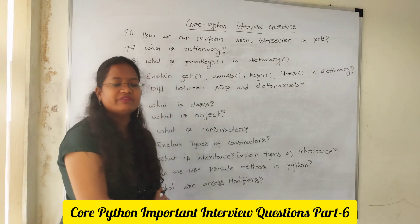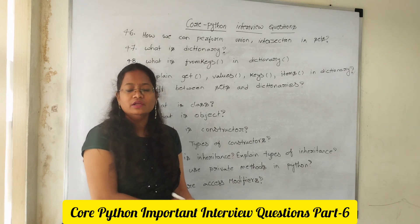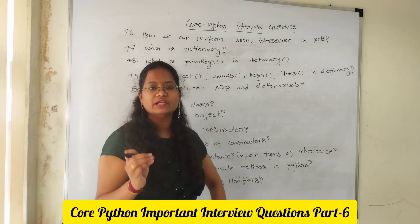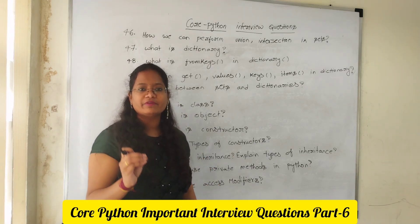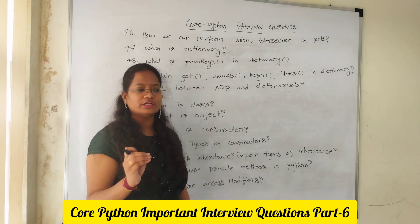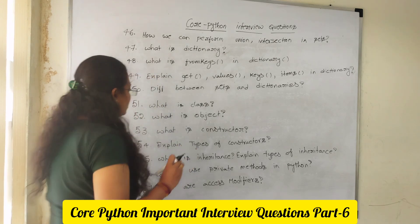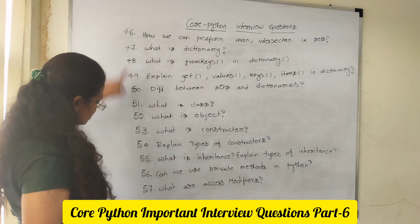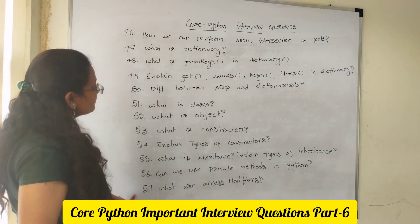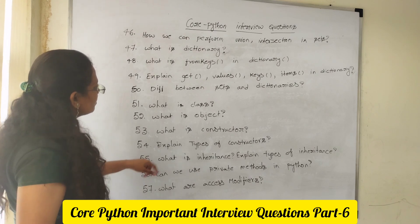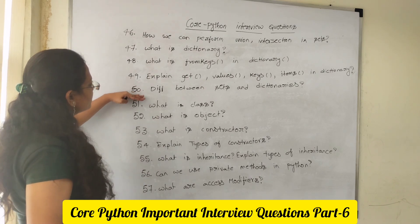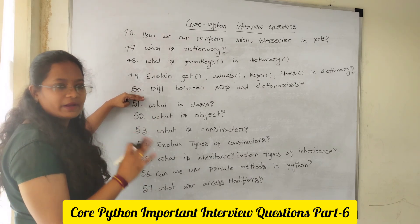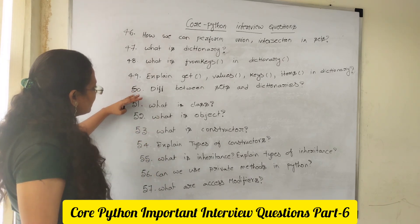Access modifiers include public, private, and protected. You need to explain how we represent public, private, and protected keywords in Python. These are questions 46 to 57, covering the basic and OOP concept part.